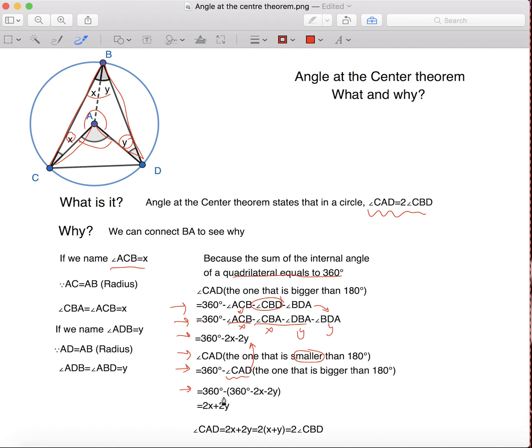We know that the one bigger than 180 has the equation of 360 minus 2X minus 2Y. So, if we plug it in, we have 360 degrees minus bracket 360 degrees minus 2X minus 2Y, and if we simplify this, we have 2X plus 2Y.